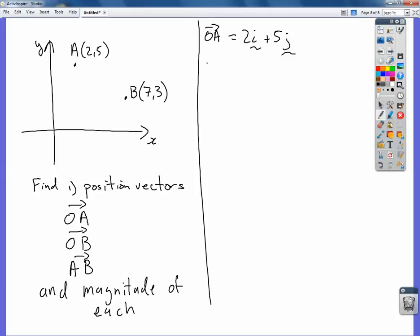Now to find the magnitude, we use these bars to represent the magnitude of the size of that vector, how long it is. We use Pythagoras. So that's 2 squared plus 5 squared. The square root thereof, that's 4 plus 25, which is the square root of 29, and I'll leave it like that. I can't make that any simpler.